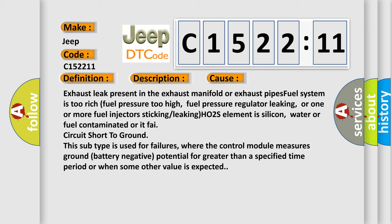Exhaust leak present in the exhaust manifold or exhaust pipes. Fuel system is too rich, fuel pressure too high, fuel pressure regulator leaking, or one or more fuel injectors sticking or leaking. H02S element is silicon, water or fuel contaminated, or at phi circuit short to ground. This subtype is used for failures where the control module measures ground battery negative potential for greater than a specified time period or when some other value is expected.